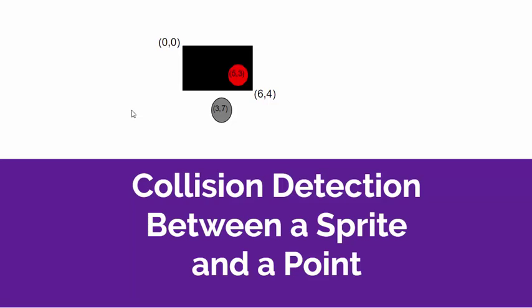For example, consider that our sprite is located between 0,0 at its uppermost left corner and at 6,4 in its bottom right corner. Now consider the touch point 5,3 indicated by the red dot. What mathematical formulas do we need to use to figure out that the red dot lies inside the black rectangle?